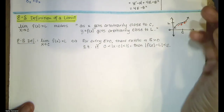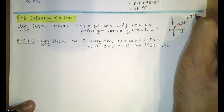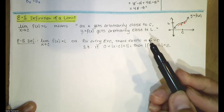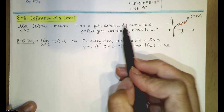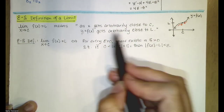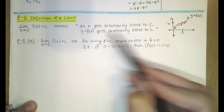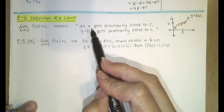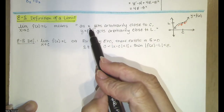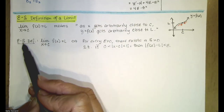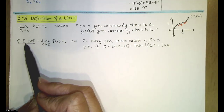You might ask yourself, how do we make that idea rigorous? How do we make this idea of being arbitrarily close to y equals L, and this idea of being arbitrarily close to x equals c, rigorous? Well, we can do so with the epsilon-delta definition.